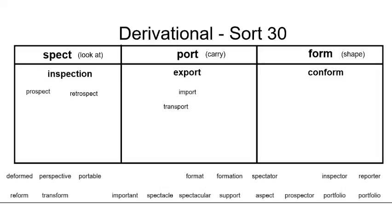Our final base word this week is 'form.' Form means shape. When we look at our prefix 'con,' con means with, so conform means to shape with. The prefix 'de' means removal, and so deformed means removal of the shape.